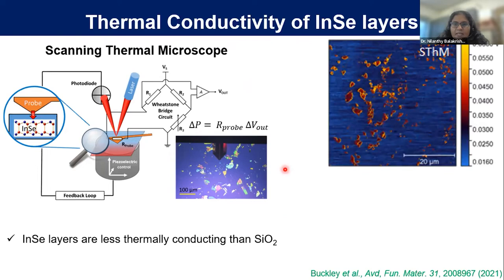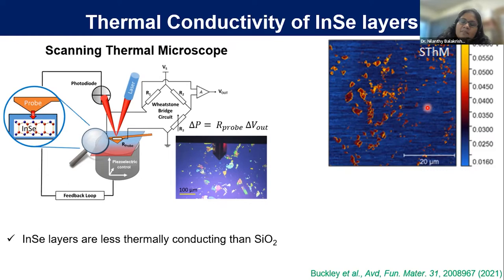Looking at a thermal scanning microscope image of a large area, we can see many indium selenide layers in a dark orange or reddish color, which means their thermal conductivity is really low compared to the silicon dioxide substrate. This was actually a surprise to us, because the thermal conductivity of bulk indium selenide is higher than the thermal conductivity of silicon dioxide.